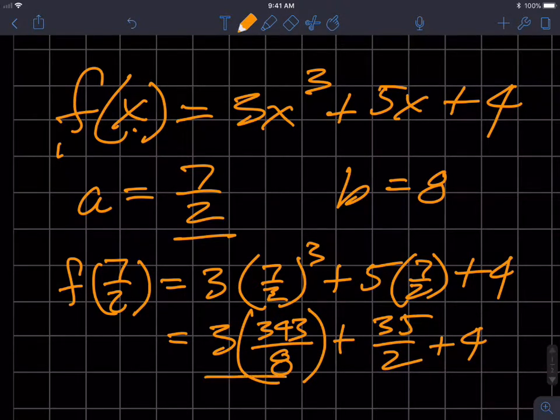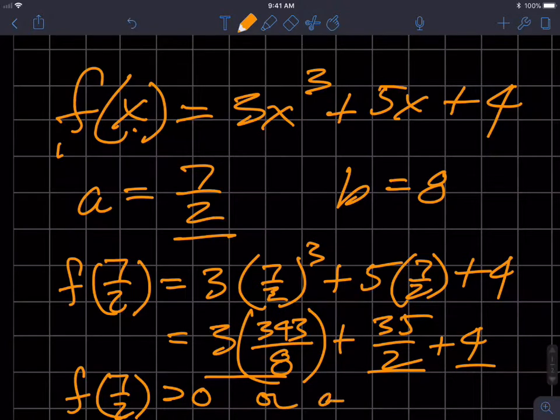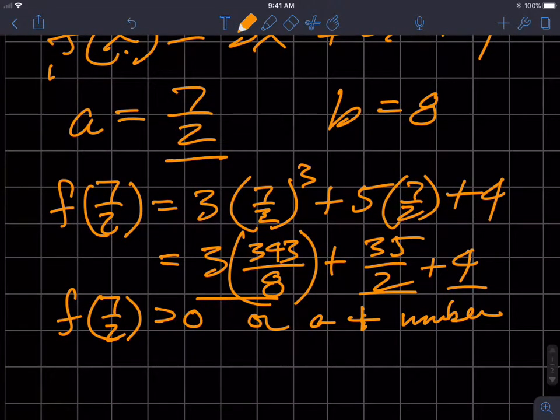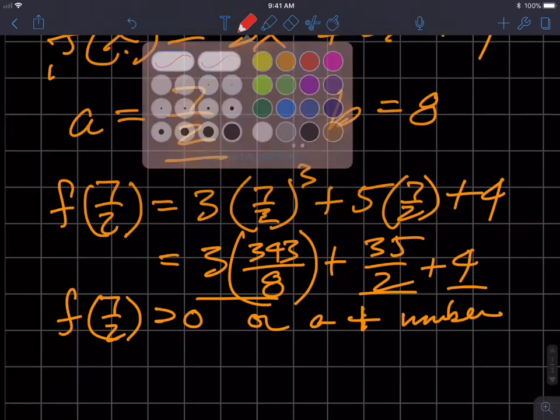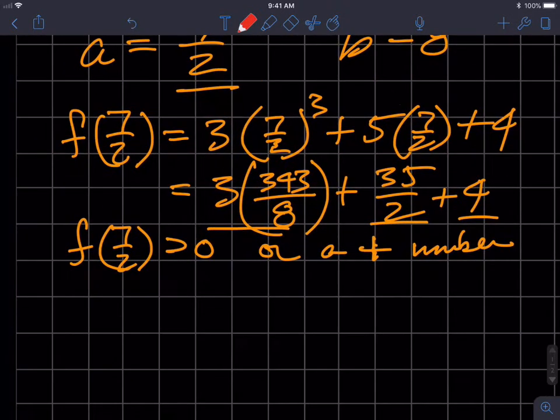This is a positive number, that's a positive number, that's a positive number. So f of 7 halves is in fact greater than 0, or a positive number. Because we don't really care what the value is so much as we want to know if it's positive or negative. So let's change colors and let's figure out what f of b is.